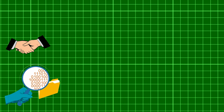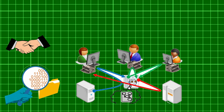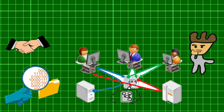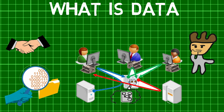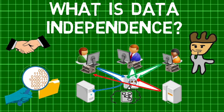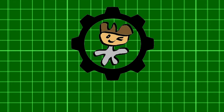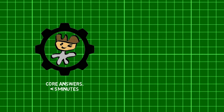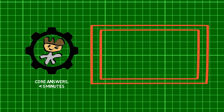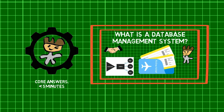Welcome back MechanicalEI. Did you know that Data Independence is the type of data transparency that matters for a centralized DBMS? This makes us wonder, what is Data Independence? Before we jump in, check out the previous part of this series to learn about what a database management system is.